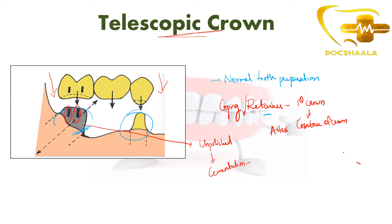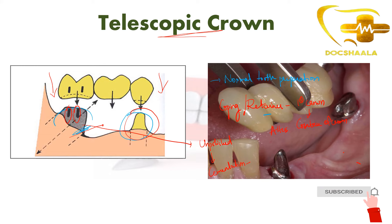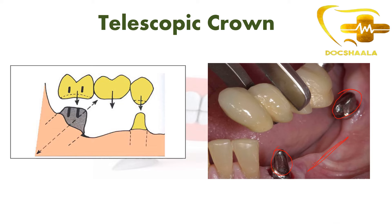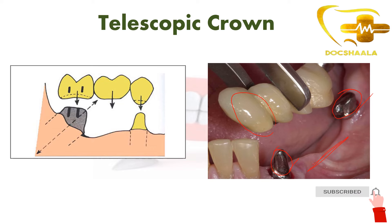The copings are made on both abutments — not only on the tilted mandibular molar but also on the second premolar. Here you can see the copings being made on the premolar and also on the molar. In this case, the first and second premolars are missing, and we are making a coping on the canine and also on the first molar. You can also appreciate the vertical slots on these copings — this is what is called a telescopic crown.